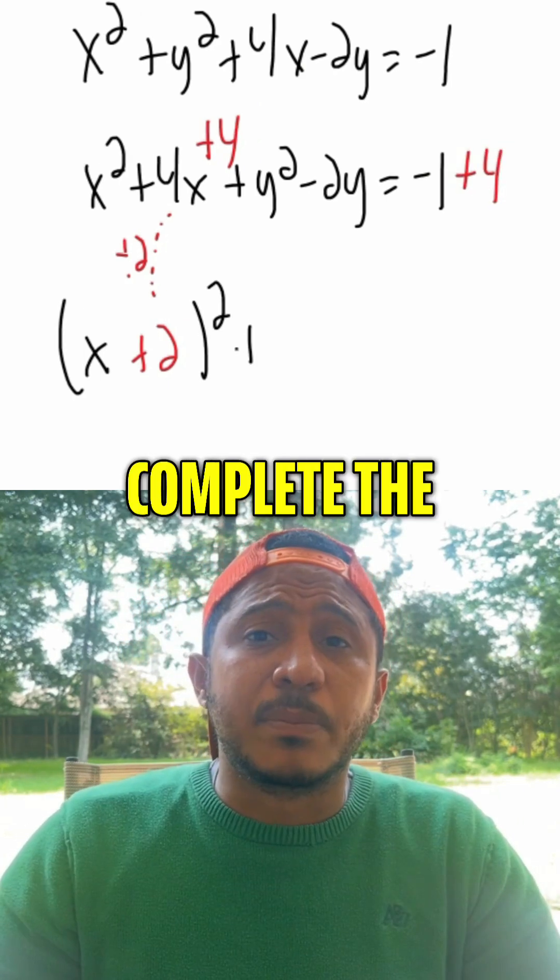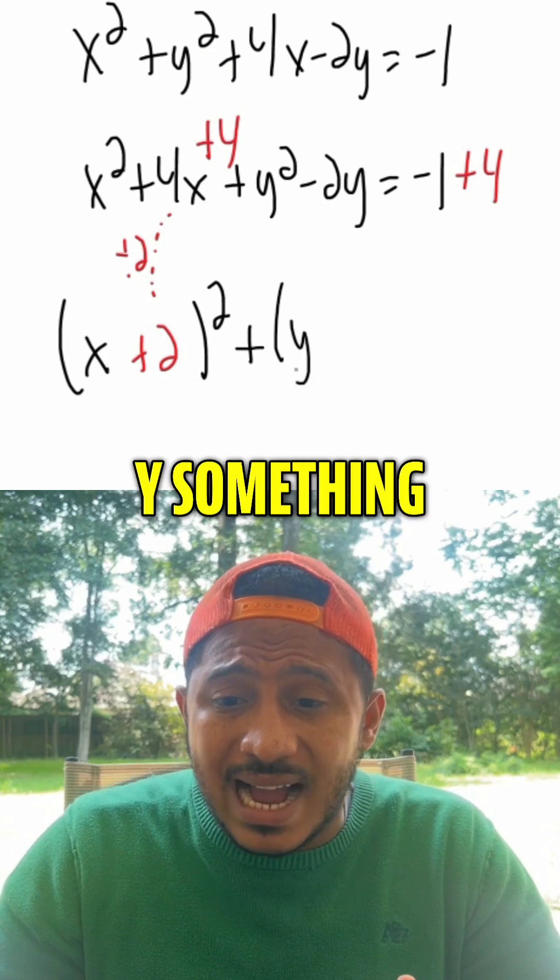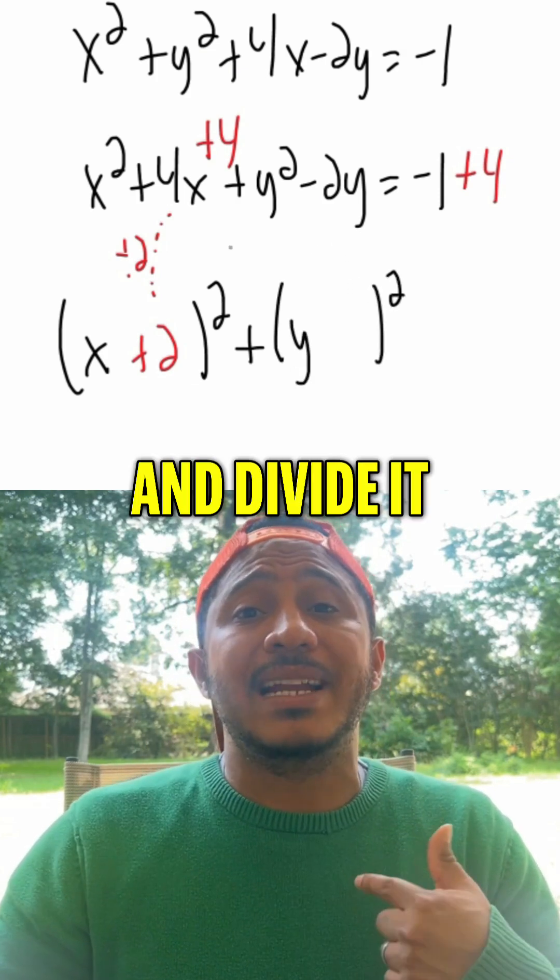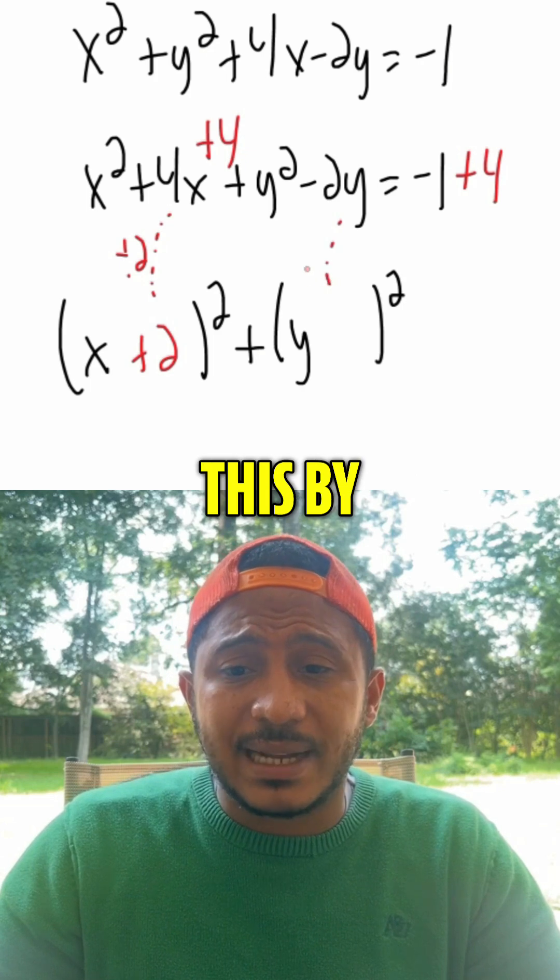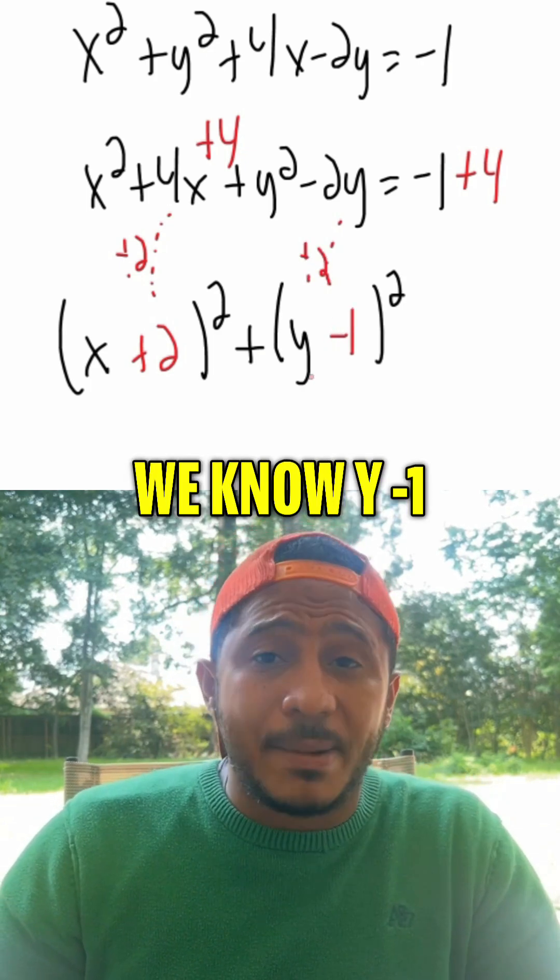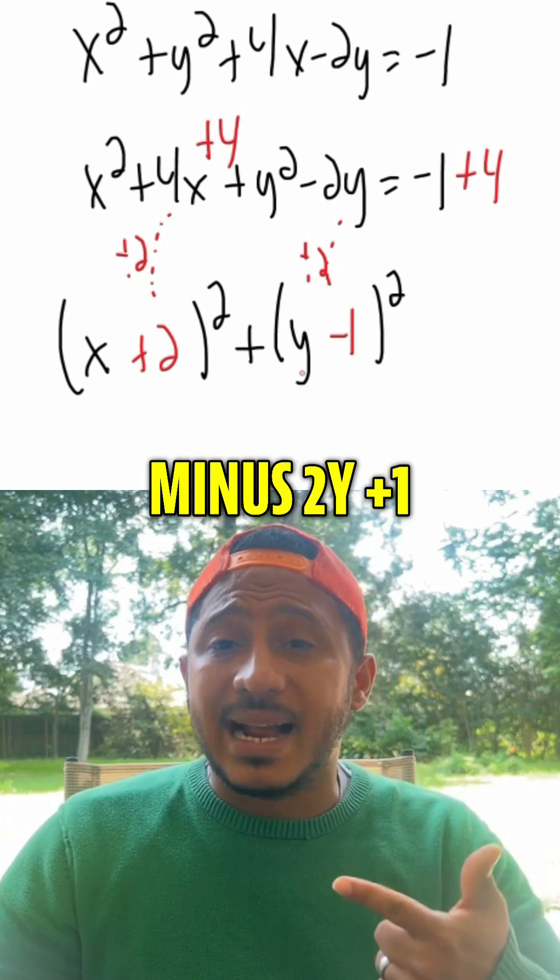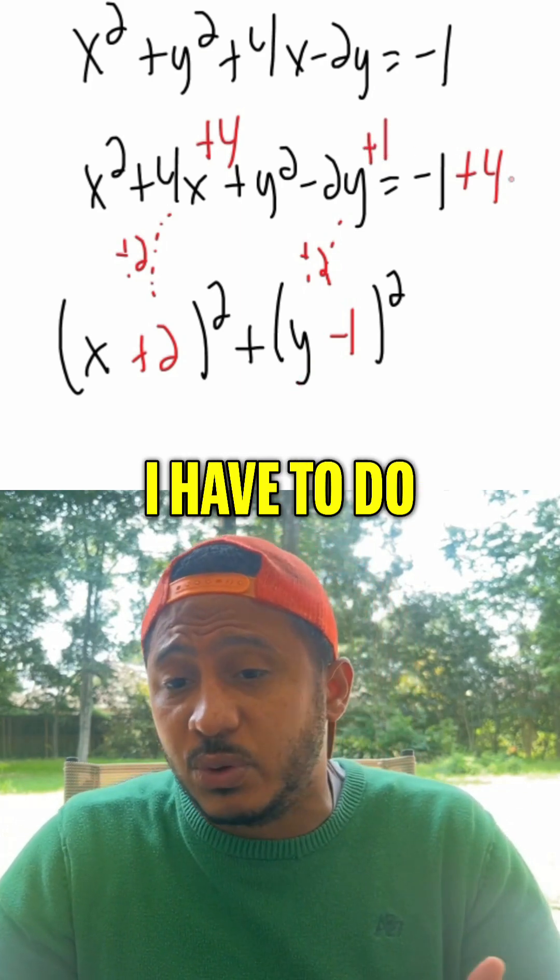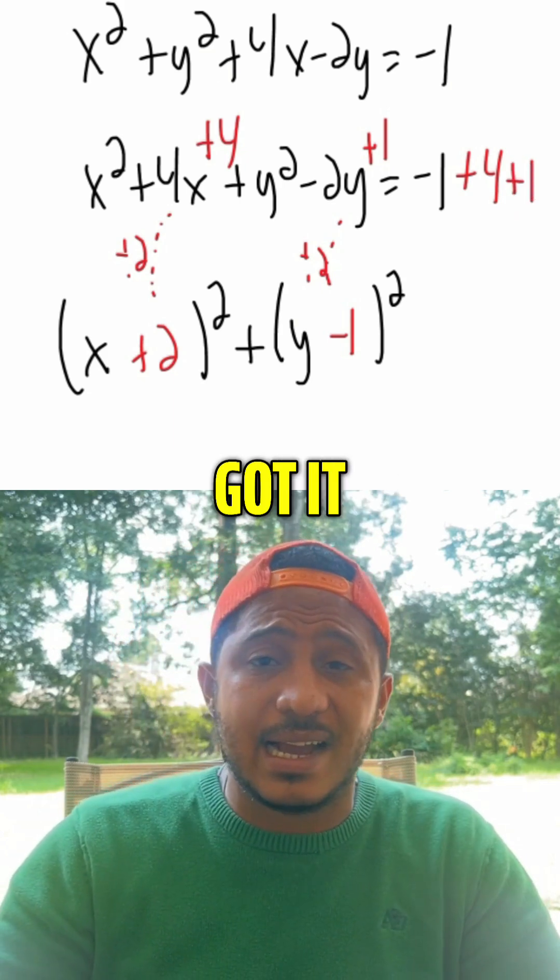So let's do the same thing with the y stuff. So to complete the square with the y stuff, we write this as y something squared. But to find that something, we take that b and divide it by 2. So dividing this by 2 will give us negative 1, but to compensate for that, we know y minus 1 squared is y squared minus 2y plus 1. So we have to add 1 to the line above, but if I do it to the left-hand side, I have to do it to the right-hand side.